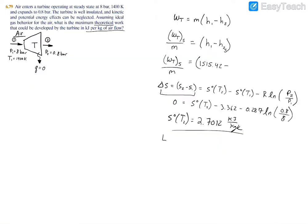And when you interpolate that, you're going to find that h2s, because it's isentropic, is going to be equal to 808.78, and that's kilojoules per kilogram.